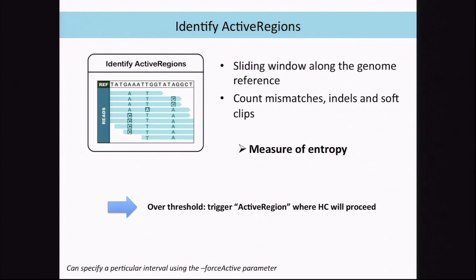The first step is identifying active regions. Active regions are regions where there's potential variation from the reference genome. We find them by using a sliding window across the reference genome, counting up where all the mismatches, indels, and soft clips are, and keeping a measure of entropy. If it crosses a threshold, it triggers an active region — and those are the regions where HaplotypeCaller proceeds and works on.